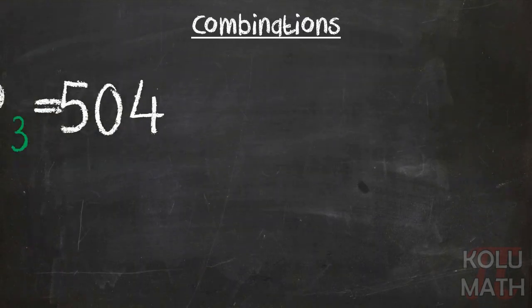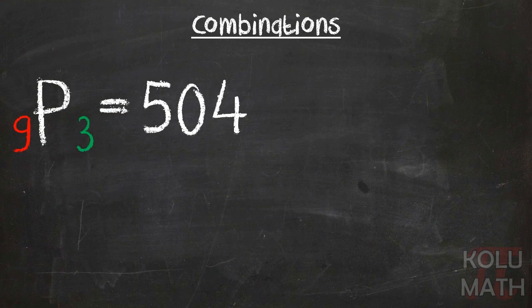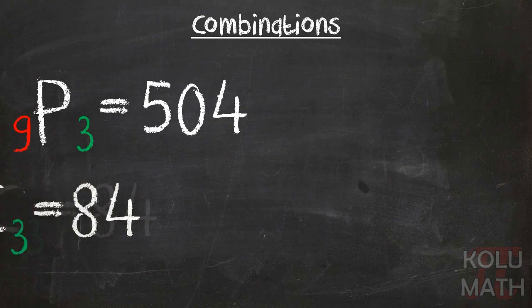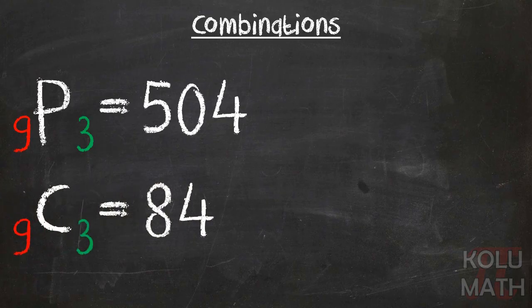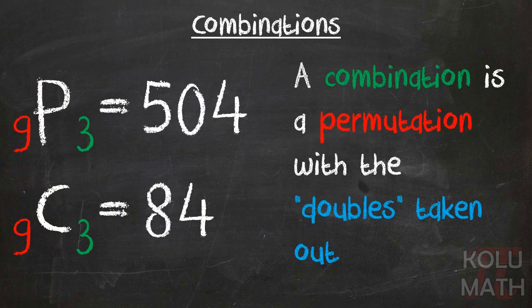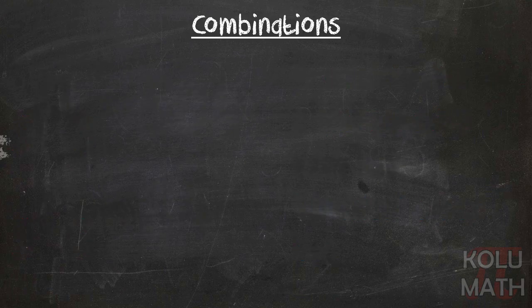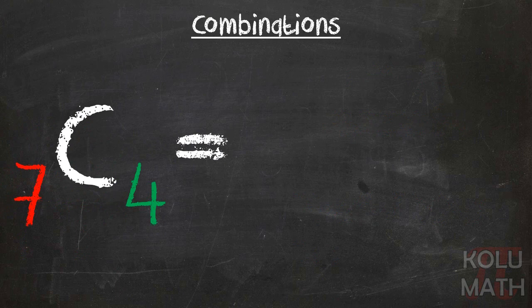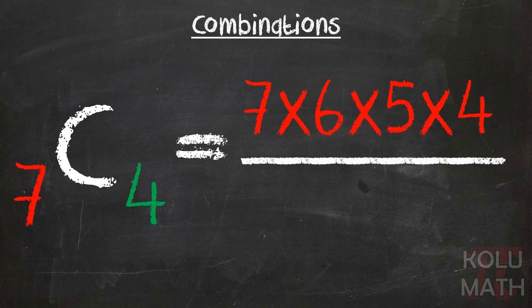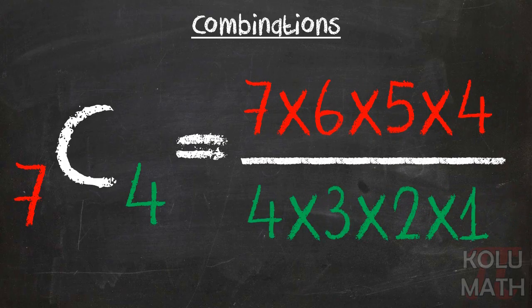And if you notice, the 9p3 is 504, and the 9c3 is 84. And those numbers demonstrate that a combination is a permutation with the doubles taken out. Just real quickly, to do a 7c4, all we have to do is 7, count down four numbers, multiply them together, and then do 4, count down, multiply them together. Just that simple to solve a combination.